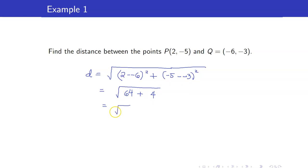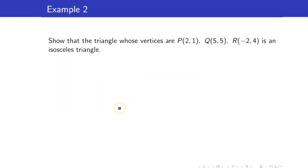Next, let us show that the triangle whose vertices are P(2, 1), Q(5, 5), and R(negative 2, 4) is an isosceles triangle. Recall that an isosceles triangle is a triangle with at least two congruent sides.